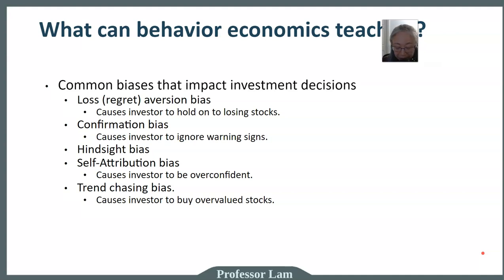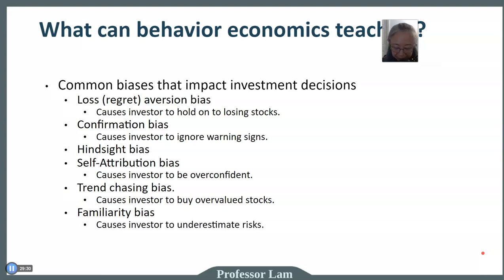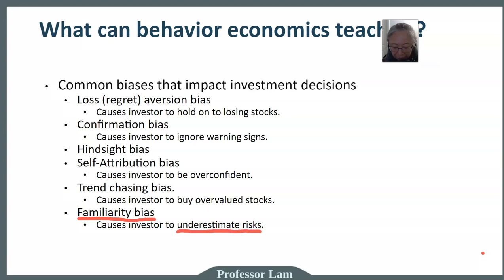Familiarity bias causes investors to underestimate risk. For example, you may know the name of a business and think it must be a good stock — but recognizing a company name does not make that stock a good investment. We'll stop here; in the next video we'll talk about specific investments such as stocks and bonds.